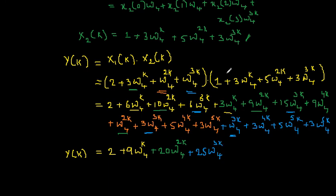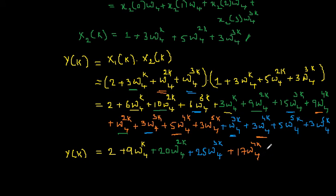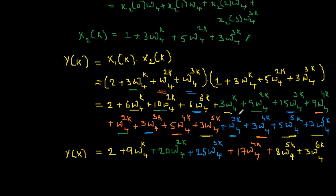For W4^(4k) terms, there are three: 9+5+3=17, giving 17·W4^(4k). For W4^(5k) terms, there are two: 3+5=8, giving 8·W4^(5k). And lastly, there is only one term with W4^(6k): 3·W4^(6k). That covers all the terms.